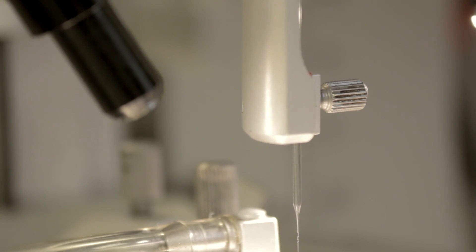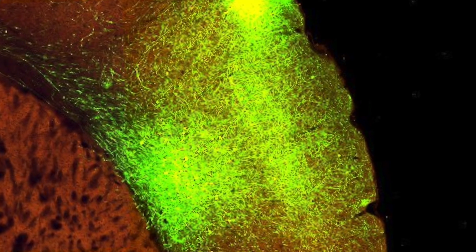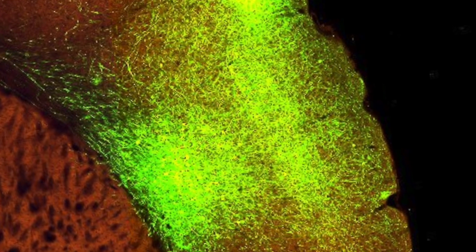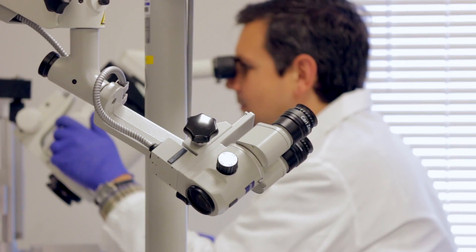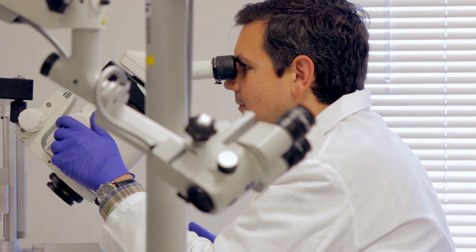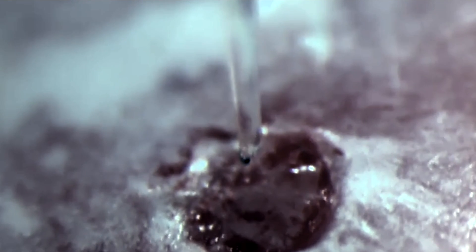We load the glass micropipette with a small amount of viral solution. We use this novel viral strategy using viruses that express green fluorescent protein at a very high level. And we pass a small current through. This enables us to get small, confined injections.